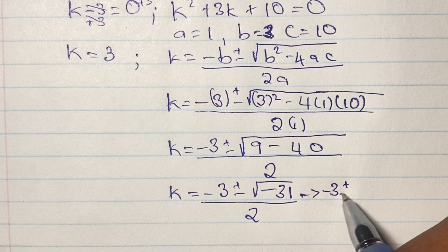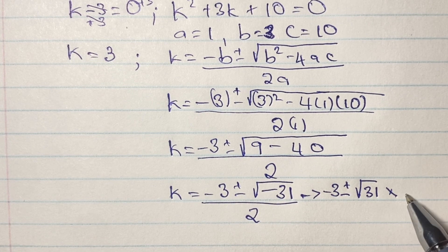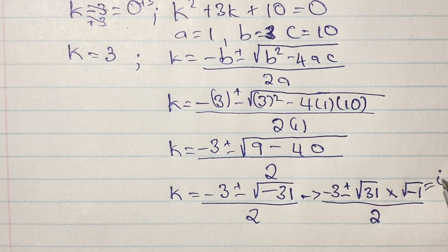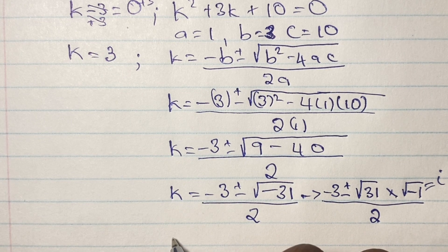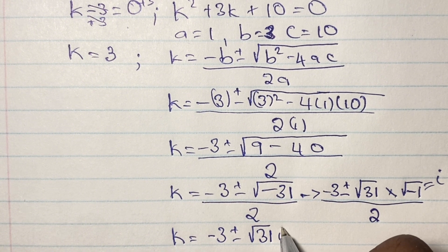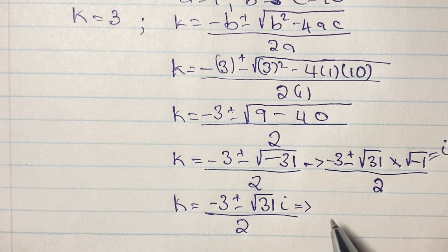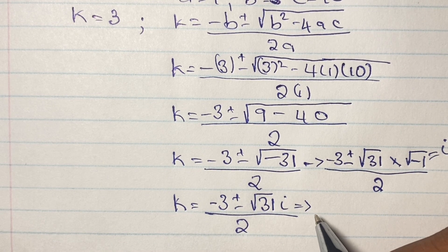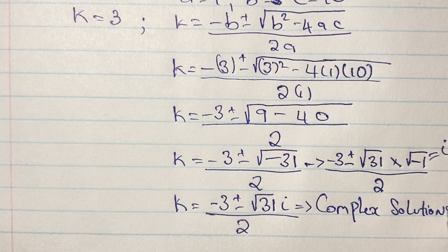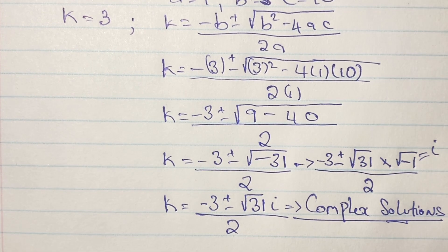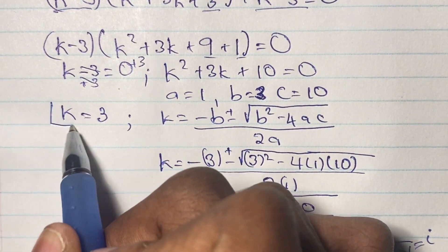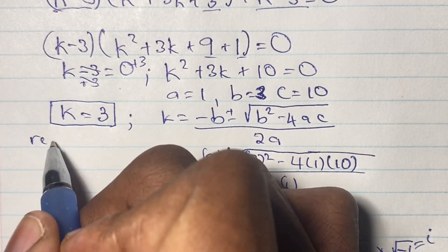We have (-3 ± √31 · √(-1)) / 2. In mathematics, the square root of negative 1 is represented by the letter i, so k = (-3 ± √31 · i) / 2. This value of k is what we call a complex solution, whereas k = 3 is our real solution to this problem.